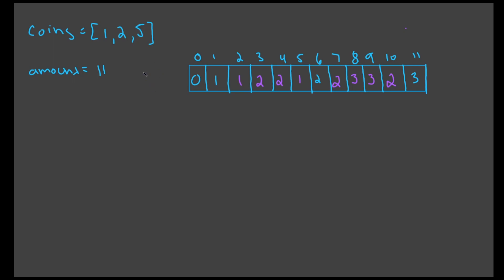I'm going to name the array to make the example easier to explain. I also want to address the fact that these indexes of the array are actually the amounts. So if we're accessing index three, for example, we're looking for the minimum amount of coins that make up three. Whenever you access results at three, we know we're going to get the smallest amount of coins possible to make that index.